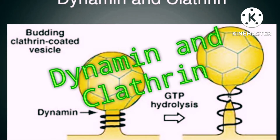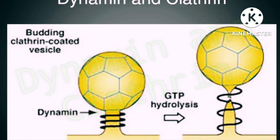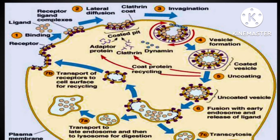Receptor-mediated endocytosis involves synaptic vesicles, dynamins, and clathrin. Dynamin belongs to the superfamily of GTPases and is a microtubule-binding protein of 100 kilodaltons molecular weight that helps in the formation of synaptic vesicles. Clathrin helps in the formation of coated vesicles. From the figure it is clear that dynamin and clathrin signal the lysosome to come, bind, and do its specified work.